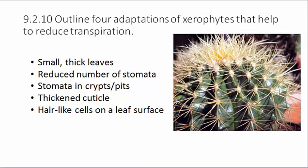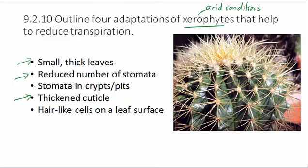9.2.10 says outline four adaptations of xerophytes that help to reduce transpiration. Xerophytes are plants adapted to arid conditions, like cacti in the desert. They have small, thicker leaves, a reduced number of stomata, and thickened cuticles — all of which prevent water loss. When stomata are located in crypts, pits, or surrounded by hair-like cells on the leaf surface, humidity around the stomata is increased, further preventing water loss.